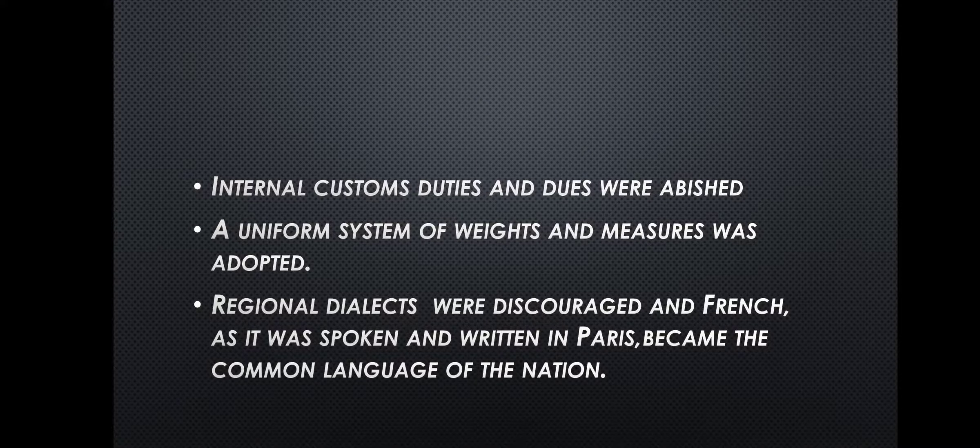With that, today's topic is complete. Tomorrow we will study the Napoleonic Code — which we call the Civil Code of 1804. In this particular chapter, the most important question we dealt with today is: mention the measures and practices introduced by the French revolutionaries that could create a sense of collective identity among the French people.